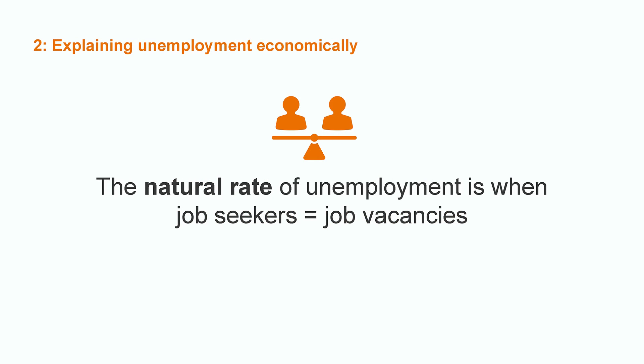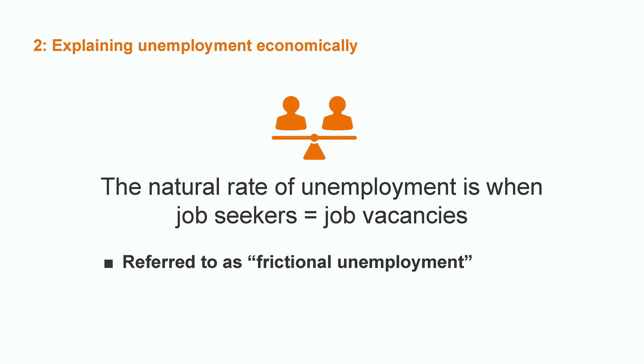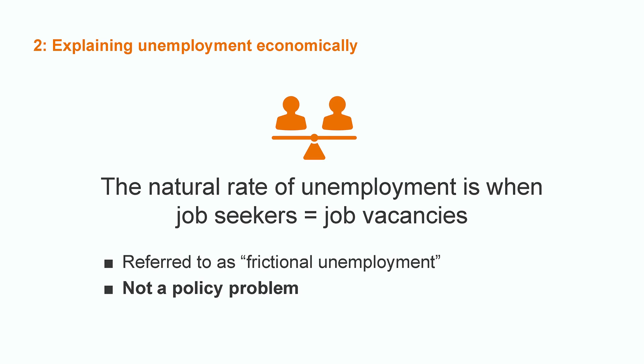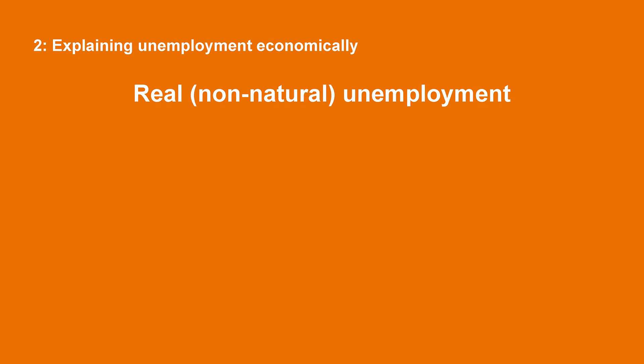So, how can we explain the existence of unemployment? A first explanation could be that it is natural — there would be a natural rate of unemployment. This could be the case when there are as many job seekers as there are job vacancies. In this case, unemployment just means there is a normal time delay before every job seeker fills a vacancy. It is also referred to as frictional unemployment. It is not a policy issue. Some economists say the natural rate of unemployment would be around 4–5%, but this is a debated issue, and it is possible it has gone down between the post-war period and now.